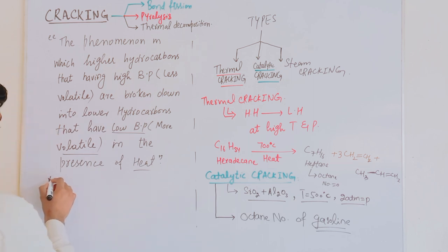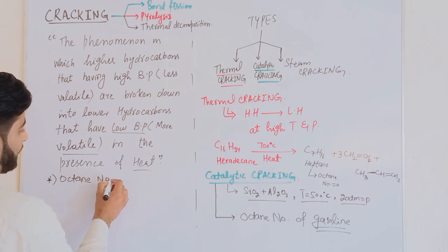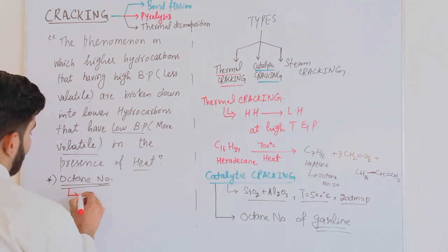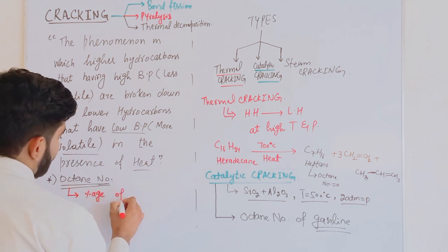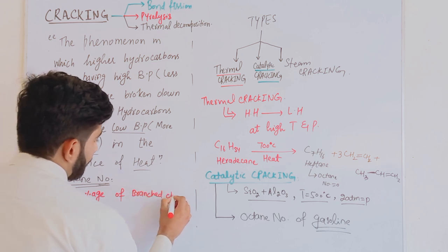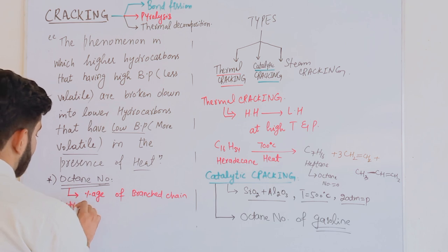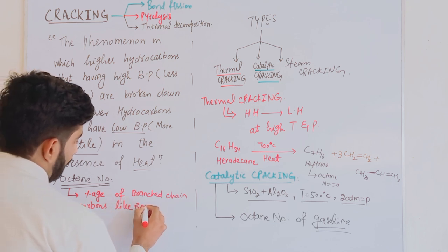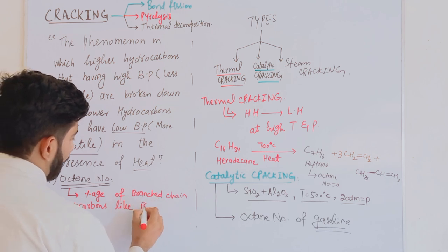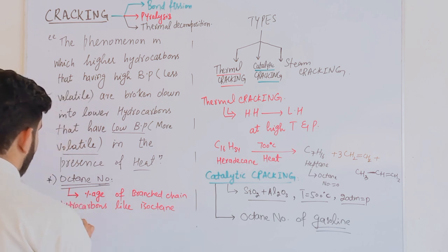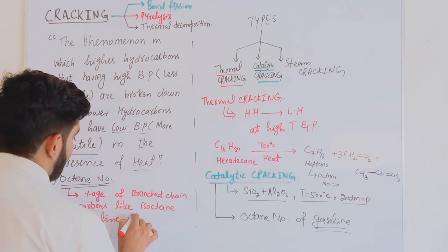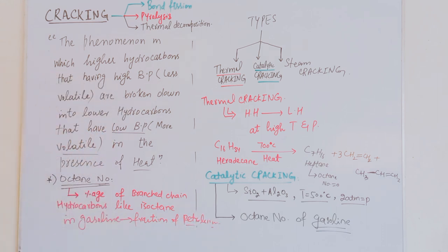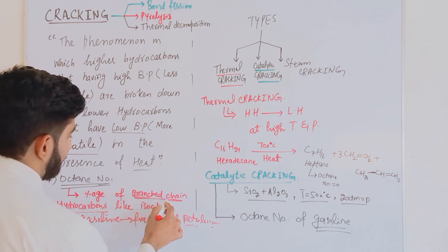Octane number is defined as the percentage of branched-chain hydrocarbons, like isooctane, in the gasoline fraction of petroleum. The greater the percentage of branched-chain hydrocarbons such as isooctane in gasoline, the higher the octane number.